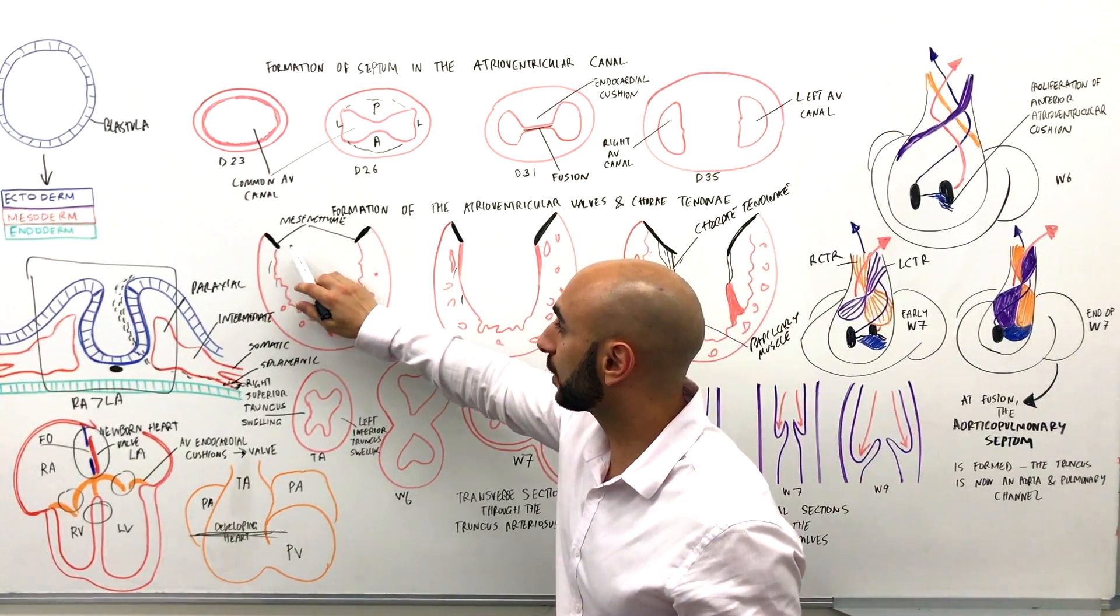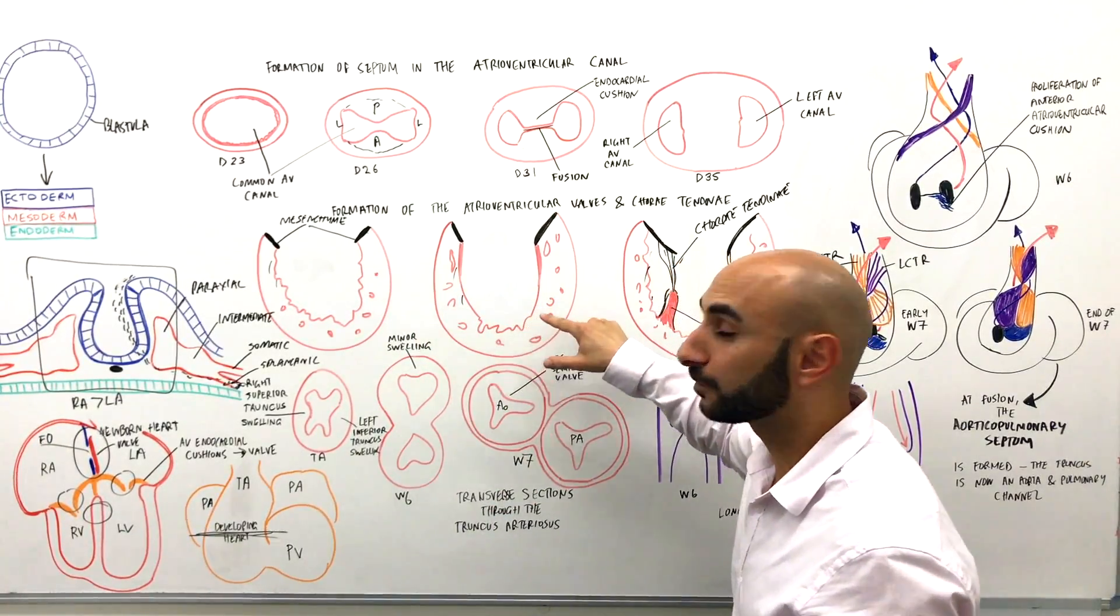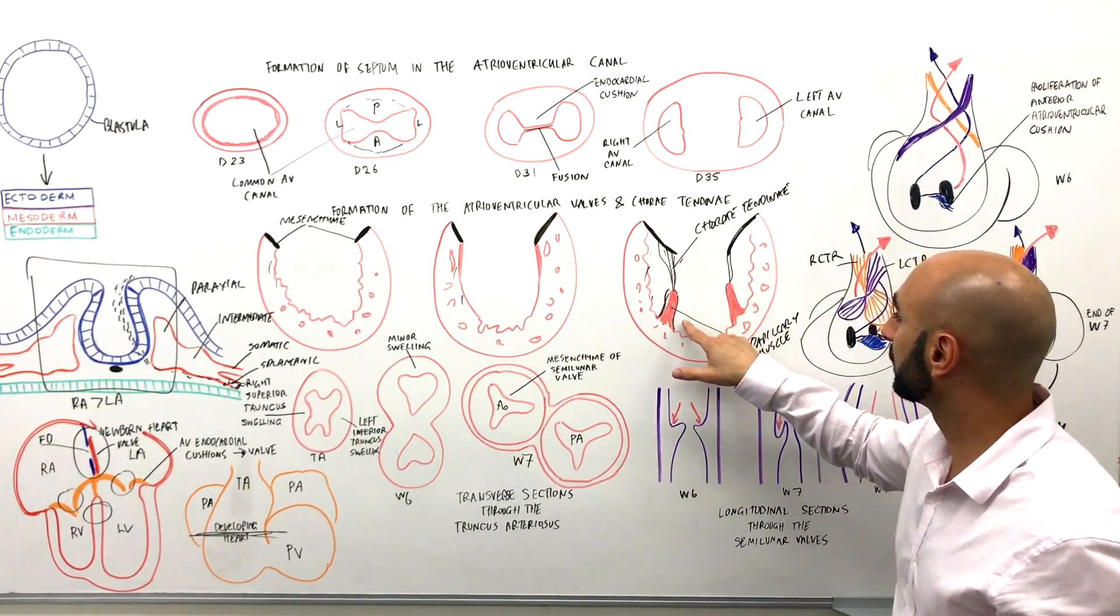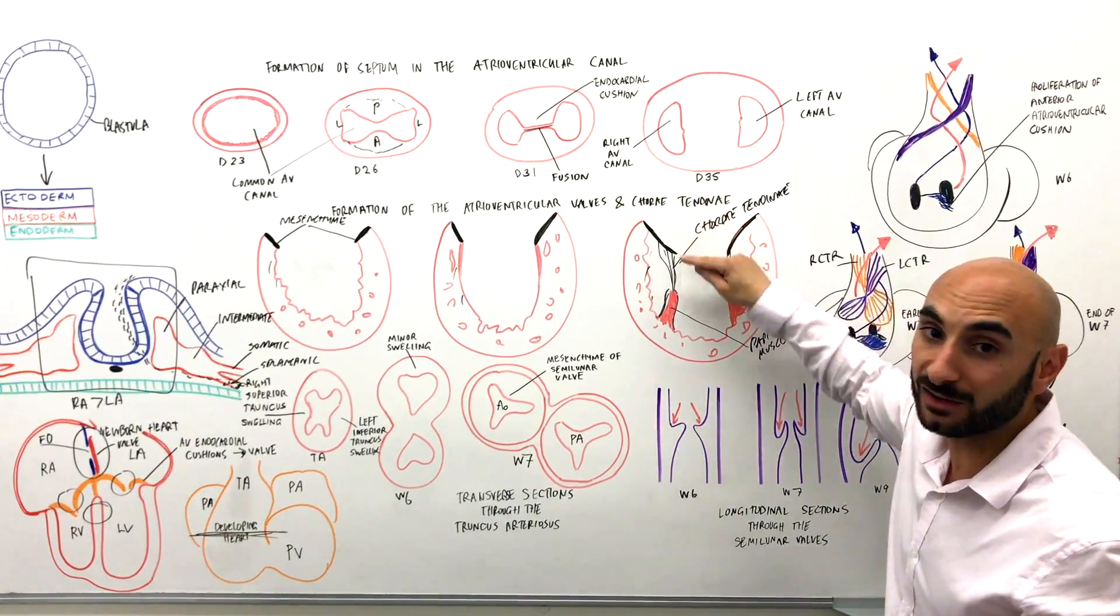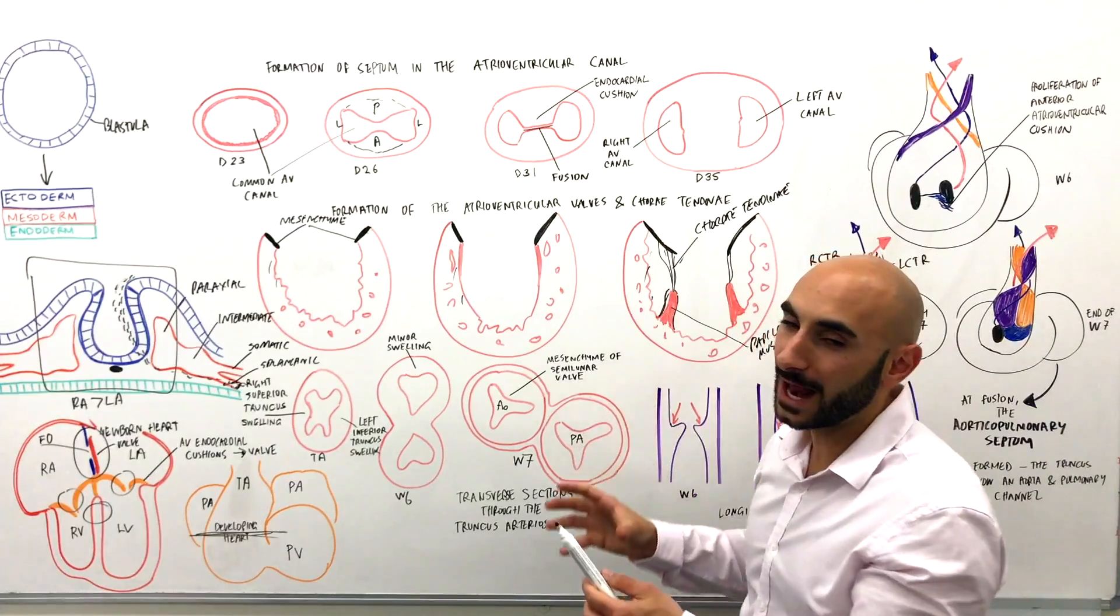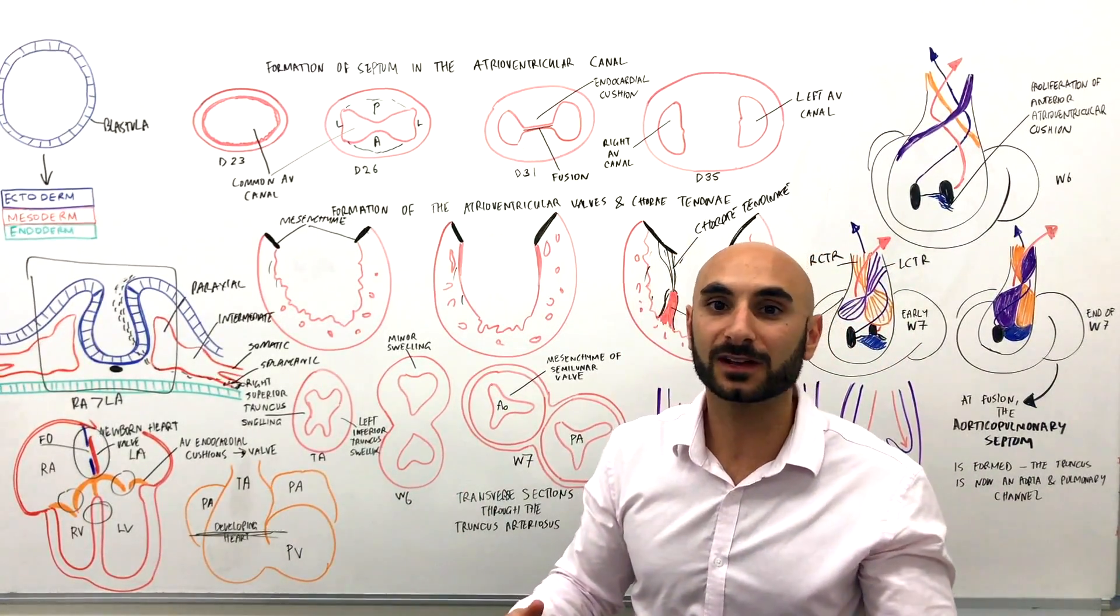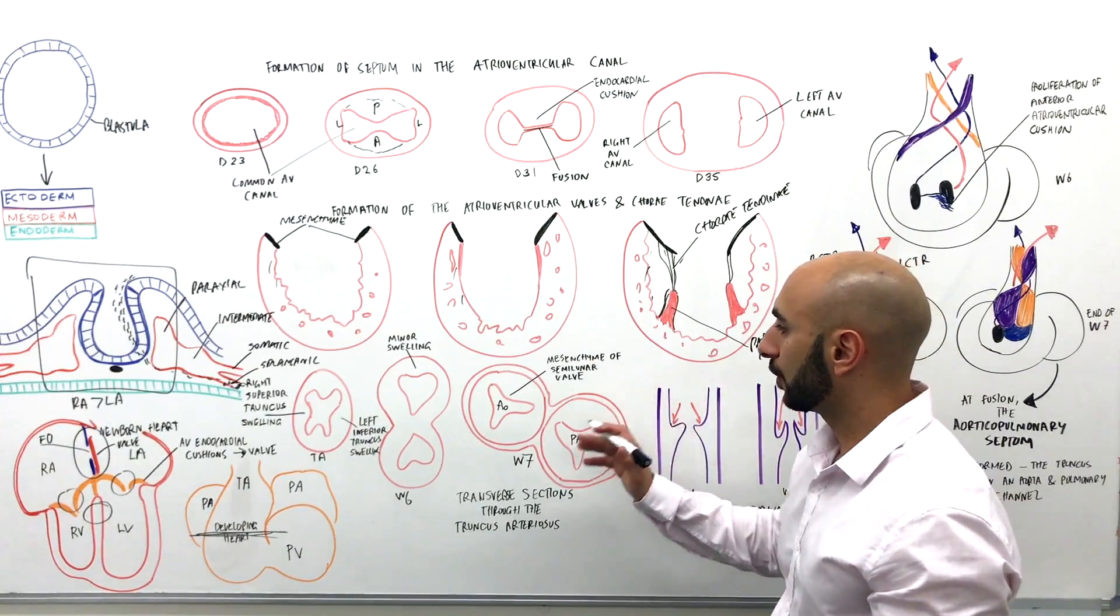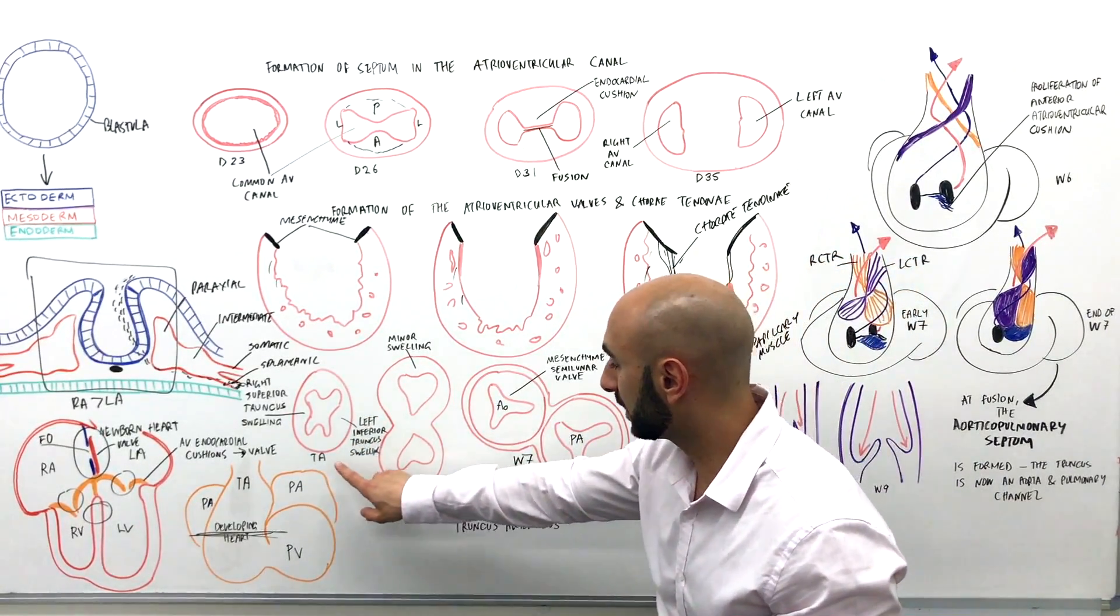Okay, so again to summarize, we have a local proliferation of mesenchyme as well as a hollowing out of the ventricle from blood flow, forming the papillary muscle and the chordae tendineae, which are attached to the valve. And this is a generic framework for what happens in both the bicuspid and tricuspid development.